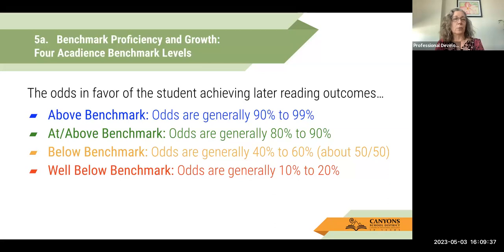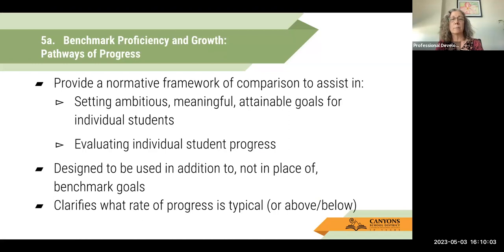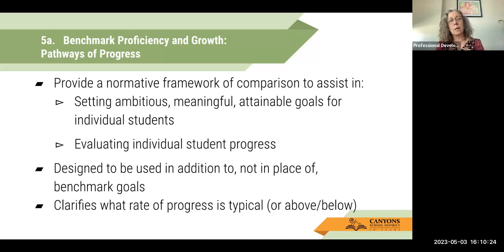Benchmark proficiency and growth: there are four benchmark levels in Acadiens, and basically the benchmarks determine the odds of a student achieving later reading outcomes. The odds are obviously better if the student is at or above benchmark than if they're below or well below benchmark. Pathways of progress, on the other hand, provide a normative framework of comparison to help us set goals for individual students. They evaluate student progress in comparison with other students who are performing at the same level, based on where the student scored at the fall benchmark. The pathways of progress are designed to be used in addition to, not in place of, benchmark goals.